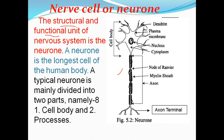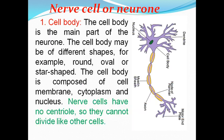The neuron consists of a cell body. The cell body is the main part of the neuron; it contains the nucleus. The cell body may be of different shapes — it can be round shape, oval shape, or other shapes. The cell body also contains cytoplasm.